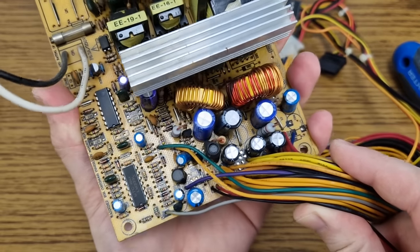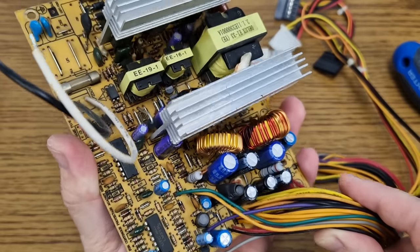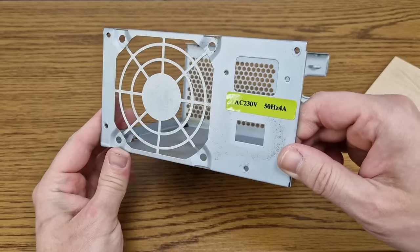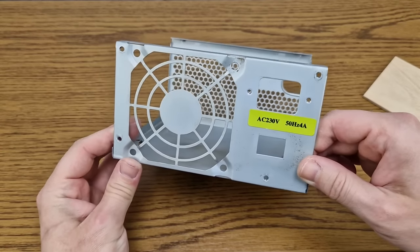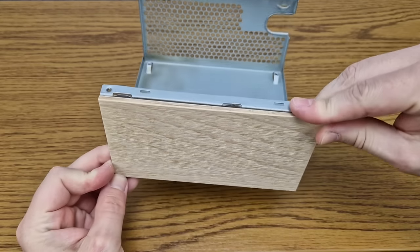Now it's a good time to inspect the circuit board. Capacitors are usually the first to fail, but these look good. The back metal panel will become the front panel, and I will replace it with a piece of 4mm plywood.